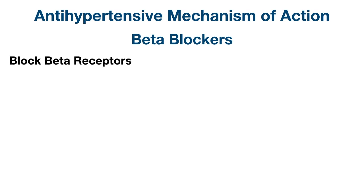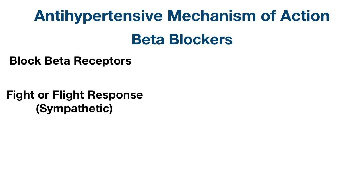Similar to alpha receptors, beta receptors are also a type of adrenergic receptor activated by catecholamines from the sympathetic fight-or-flight response. Again, in a sympathetic response, we increase blood pressure to perfuse vital tissues and organs.